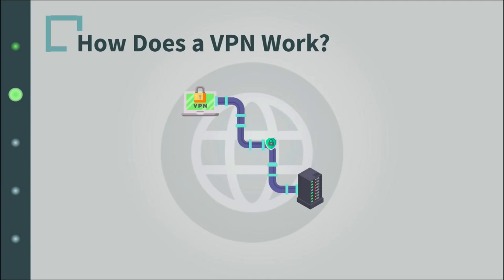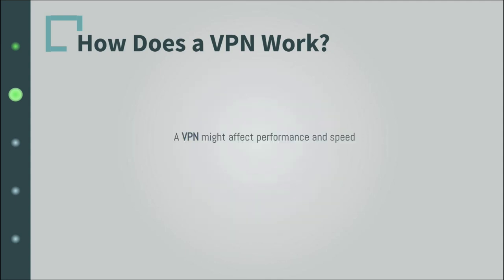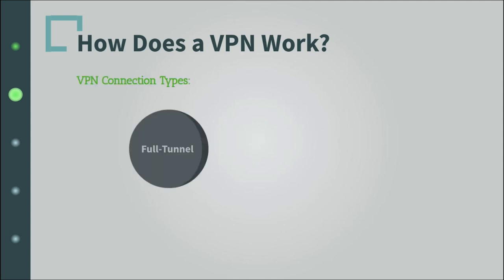The devices could be computers, mobile phones, routers, etc. The problem is that this extra layer adds extra overhead, so it might cost performance and speed when navigating the internet. For this reason, there are two types of VPN connections: full tunnel and split tunnel.